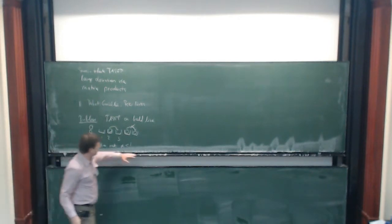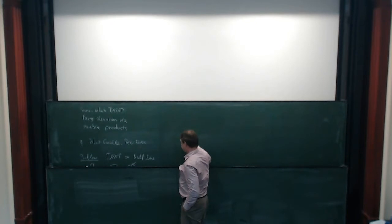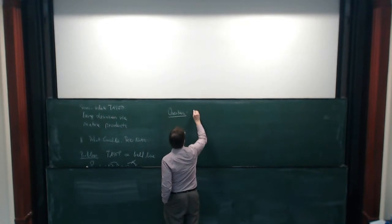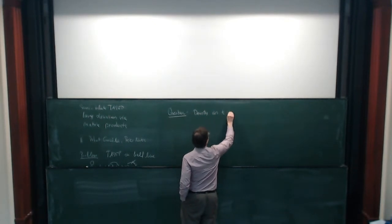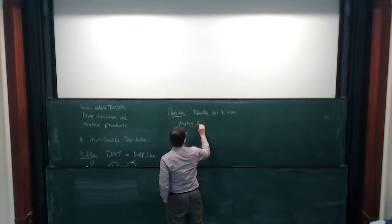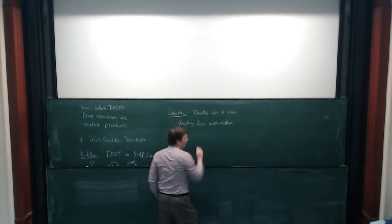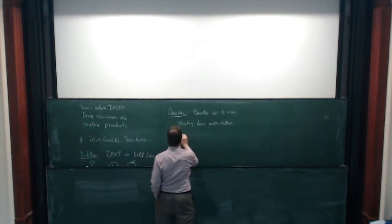The question is very simple. This is joint work with Peter Mörters and a joint PhD student, Horatio Gonzalez. We want to know the density in the lattice as time goes to infinity. I start from an empty lattice — no particles at time t equals zero — and the only parameter in the system is the insertion rate alpha.